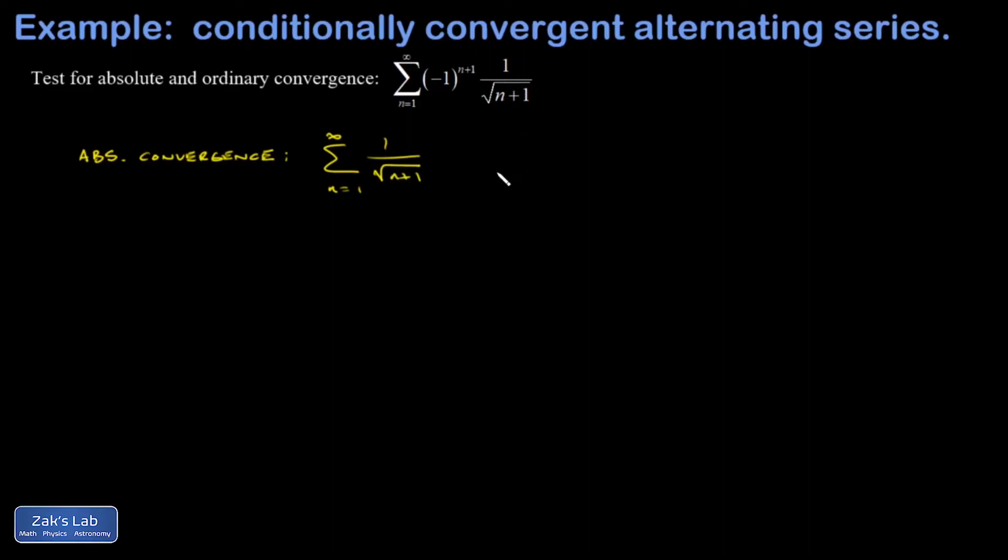So I'm going to do a limit comparison to the series n equals 1 to infinity 1 over root n. And I know that's a divergent p series because it has an exponent less than 1. It's n to the 1 half in the denominator.